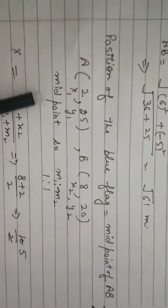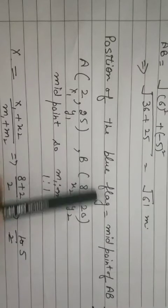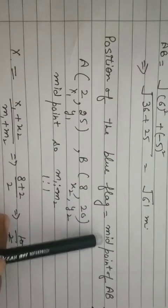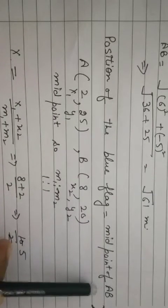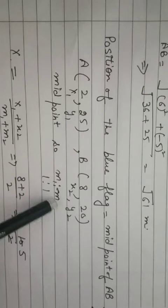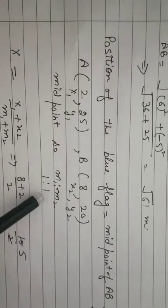Now, she asked what is the position of blue flag? And she said half way. So this means midpoint of AB. So ratio, M1 and M2, what ratio? 1 ratio 1.